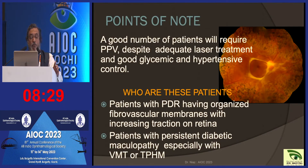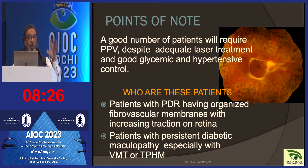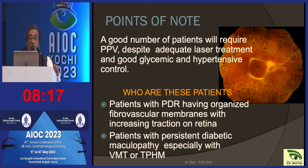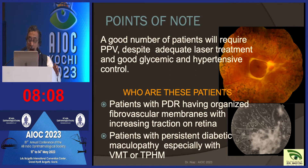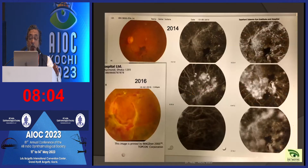One point of note is that sometimes we think that after giving PRP — the gold standard — the eye is safe. But actually it's not so, because despite adequate laser treatment, many will eventually go into proliferative stages and more proliferation will occur, as you see in the angiogram where membranes have developed after PRP. We have to keep seeing patients and proceed to surgery.